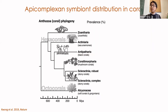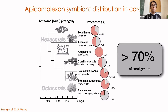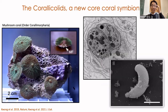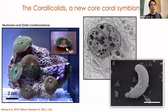We next performed sampling across diverse coral clades spanning millions of years of diversification, and found that up to 70% of genera possessed detectable levels of this Apicomplexan. We then looked into our coral tissues and found that this symbiont was residing intracellularly within the cells of the coral gastric cavity. We named this new lineage Corallicolida, meaning coral dweller. Finding this organism was pretty important because we could finally identify one of the long-sought-after members of the core coral microbiome.